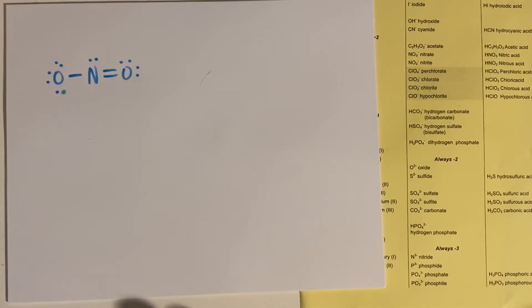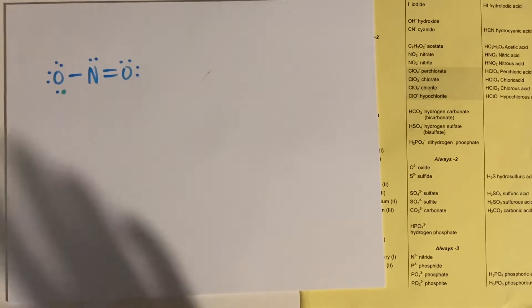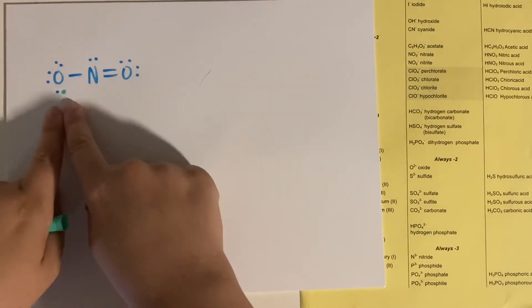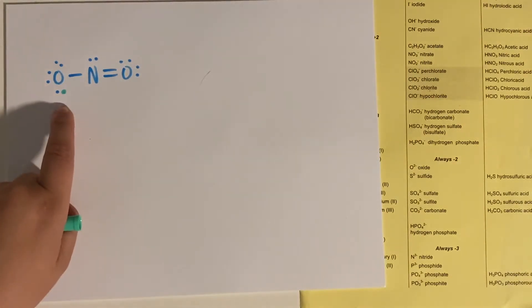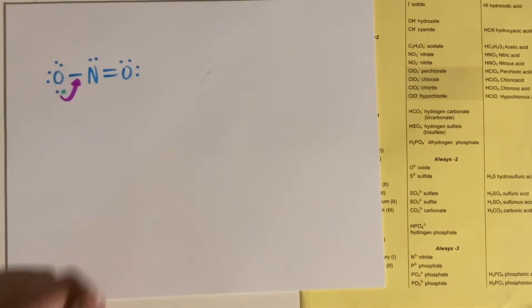Now, the reason that these are called resonance structures or why they're trickier, not only do you have to understand that they're gaining this electron from somewhere, but also at any given second, this oxygen would still be more stable if he was the one making a double bond.